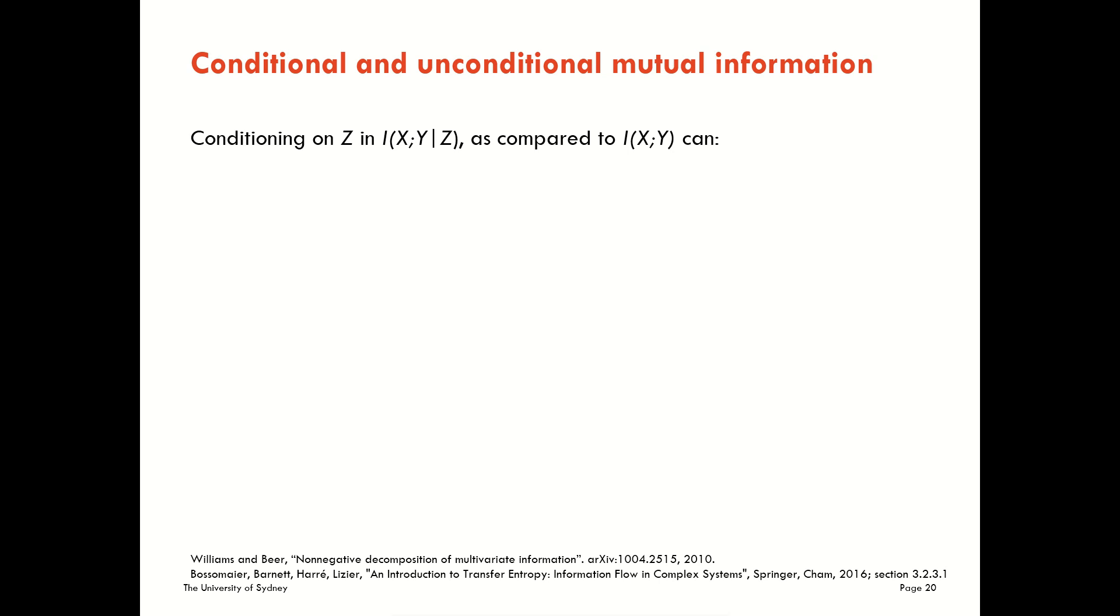Starting by comparing what we get from conditional mutual information to unconditioned mutual information, the conditioning can change things in a few different ways. Firstly, you could actually have no effect at all if the variables are all independent, for example, or simply if there is an independence of the relationship between X and Y from Z.